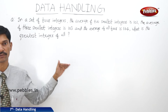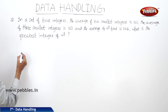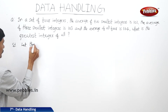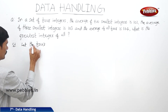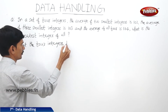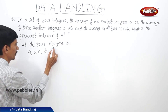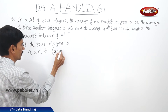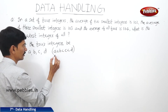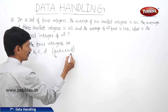We have to find the greatest integer of all four integers. Let the four integers be A, B, C, D where A is less than B, less than C, less than D. This means A is the least one and D is the greatest one.